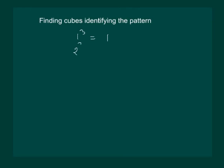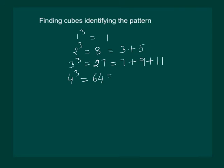2 cube is equal to 8. We can write it as 3 plus 5. 3 cube is equal to 27. We can write it as 7 plus 9 plus 11. 4 cube is 64. That can be written as 13 plus 15 plus 17 plus 19.